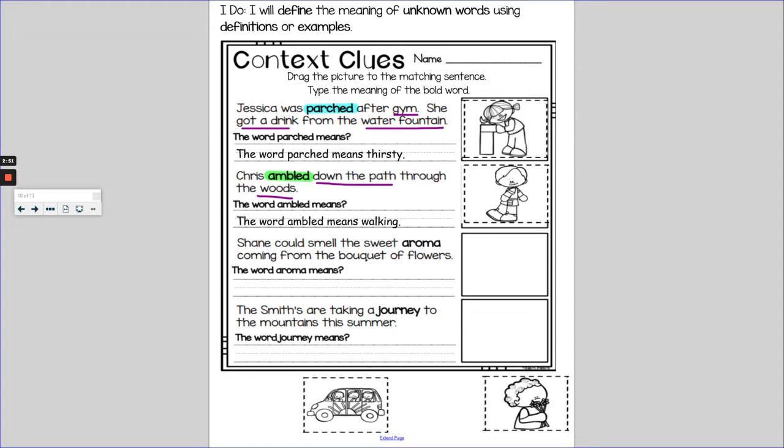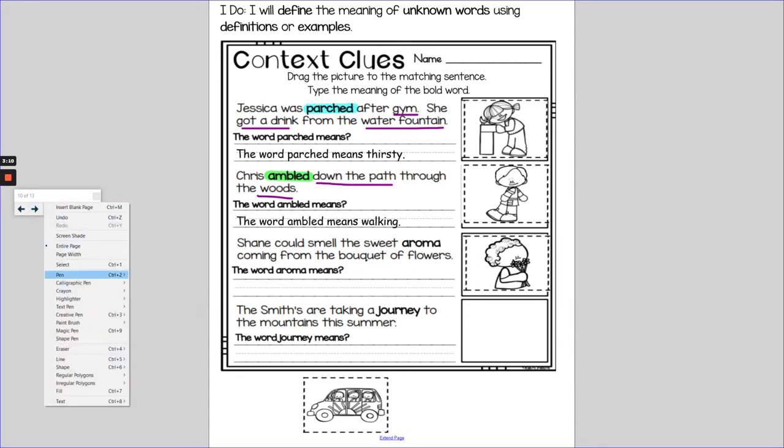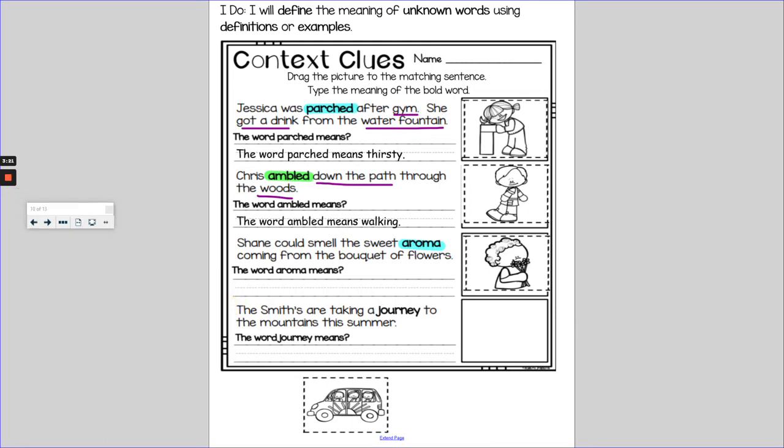Shane could smell the sweet aroma coming from the bouquet of flowers. I only have two pictures left here, a family in a van going somewhere, and a person sniffing flowers. I'm going to assume this is Shane. It's a little laggy. So he's smelling the sweet aroma. I remember in ELA when we read about the three little wolves and the big bad pig, that they put flowers on their house to trick the wolf into smelling the aroma of the wolf, the nice smell of the flowers. And we can see here that Shane is clearly smelling the nice smell that comes from the flowers, the sweet aroma that comes from the flowers.